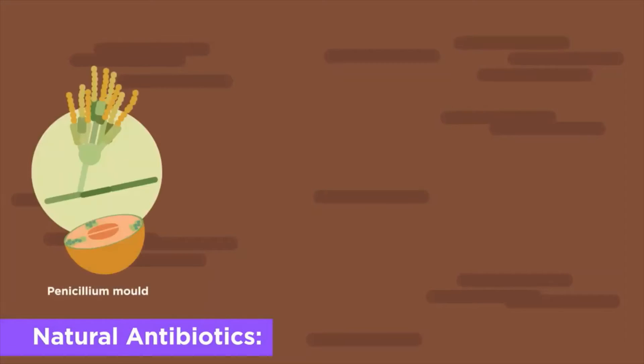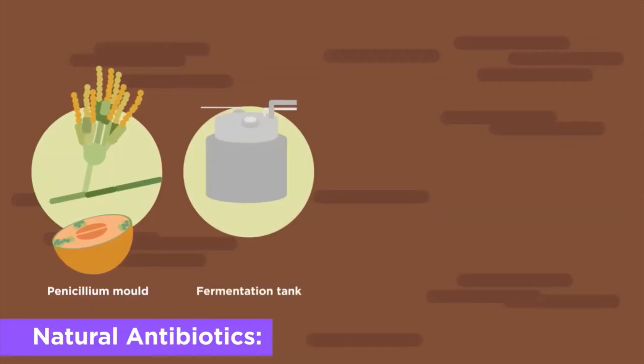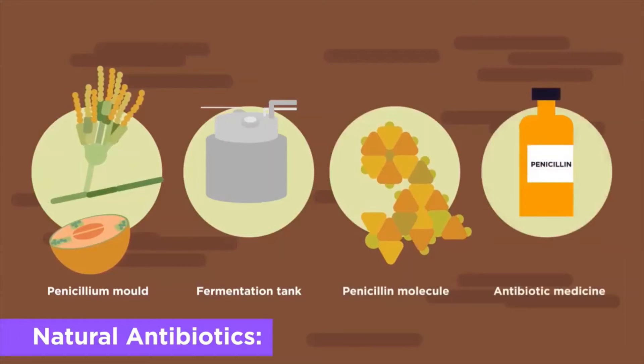Natural antibiotics. These are made by other organisms, such as fungi and other bacteria, like Fleming discovered. They are grown in huge colonies where the active substance is then extracted.